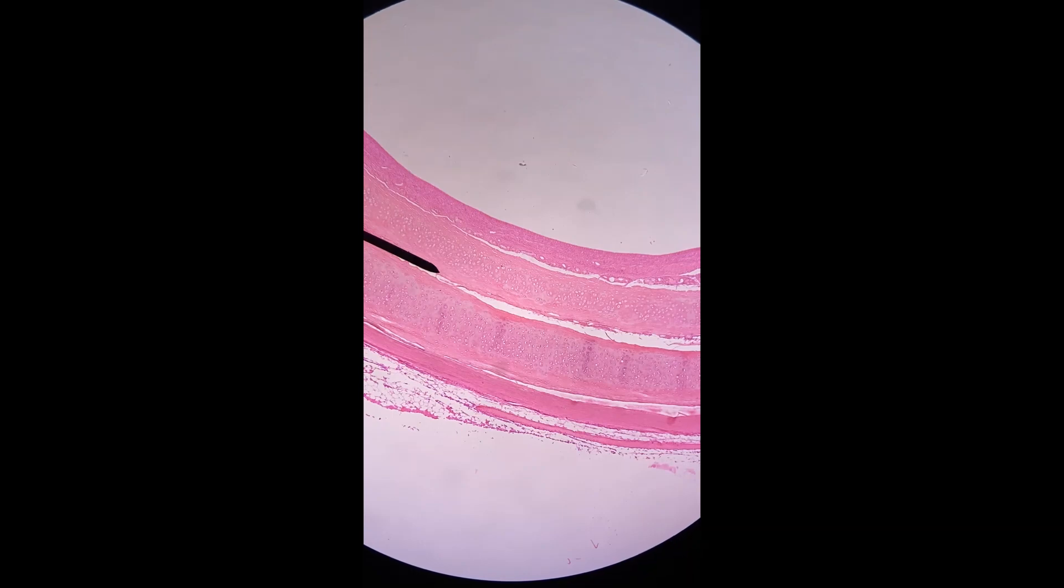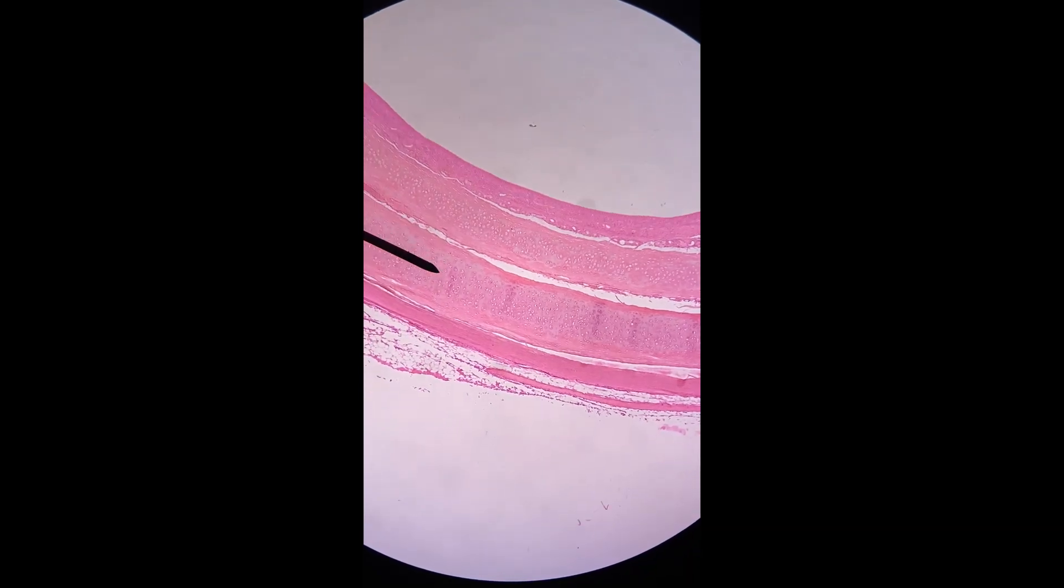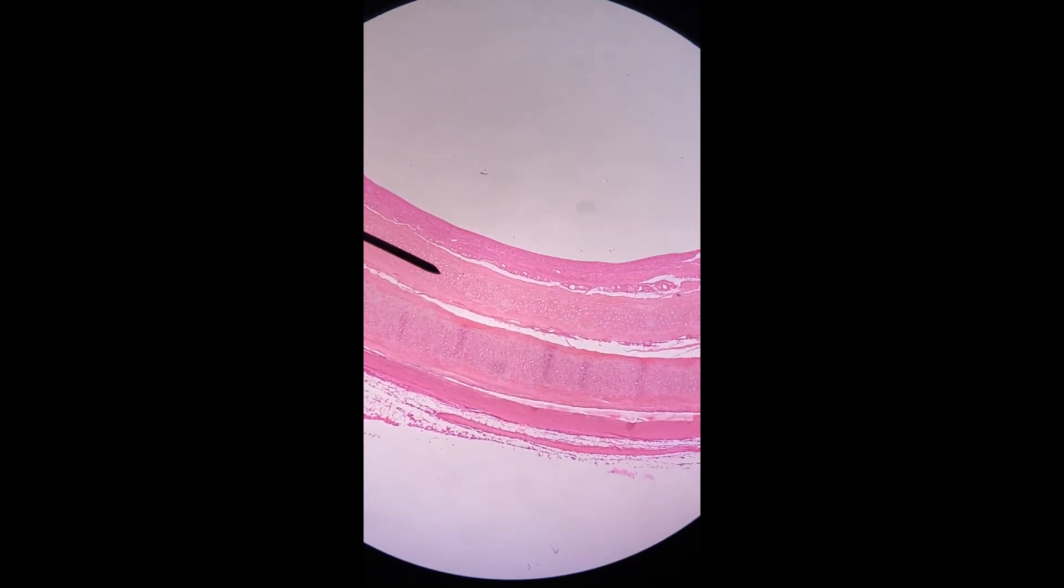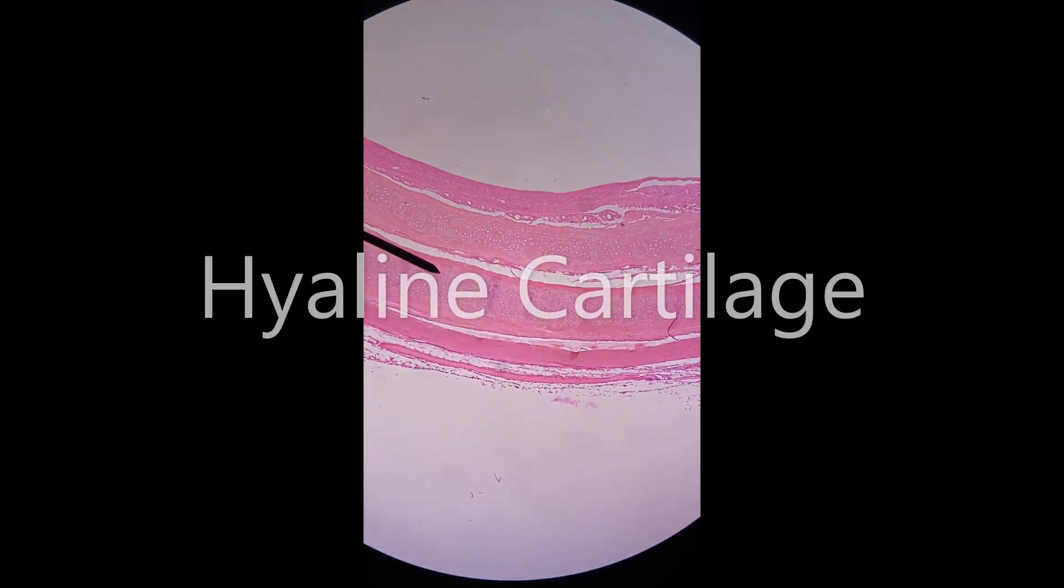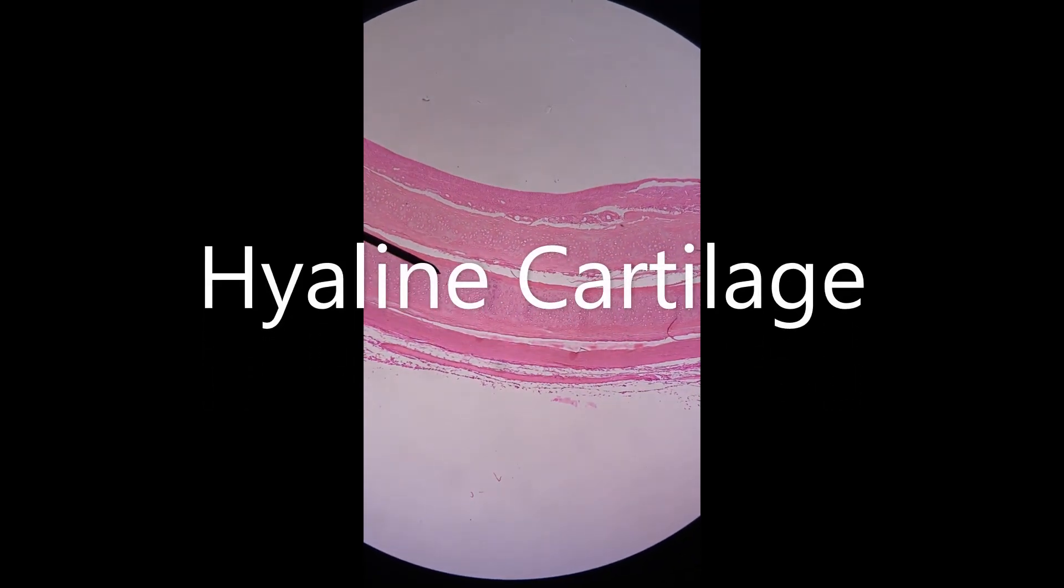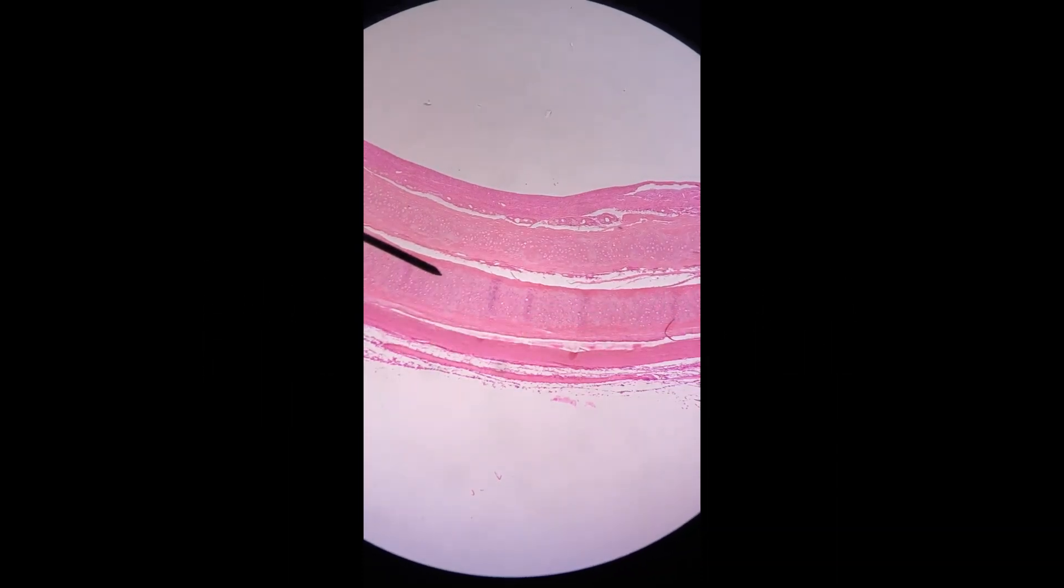This is a slide of the trachea. This is kind of a weird one, but as you can see there's two layers here and they both turn out to be hyaline cartilage. It's probably the way this thing was cut that caught parts of two rings because they don't really exist like this.